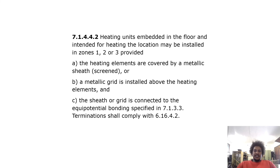Heating units embedded in the floor and intended for heating the location may be installed in zones 1, 2 and 3, provided the heating elements are covered by a metallic sheath or screened, or a metallic grid is installed above the heating elements, and the sheath or grid is connected to the equipotential bonding specified in 7.1.3.3. Termination shall comply with 6.16.4.2.